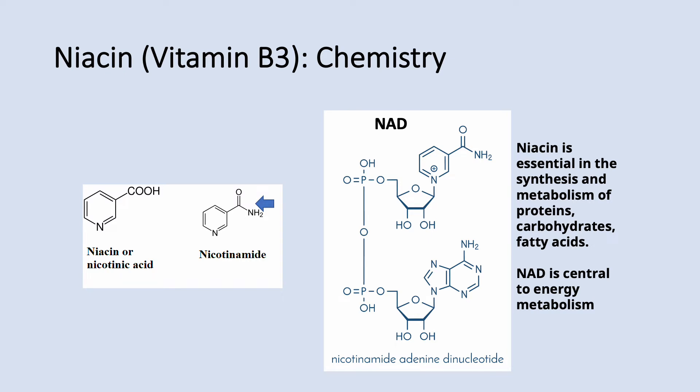Niacin is also known as nicotinic acid. In the body, it is converted into nicotinamide — the amide group is the carbon, oxygen, and NH2. Nicotinamide forms, through complex chemical reactions, nicotinamide adenine dinucleotide or NAD. NAD and NADP, which is NAD phosphate, are very essential — you cannot live without them. NAD is central in energy metabolism, in the electron chain reaction.